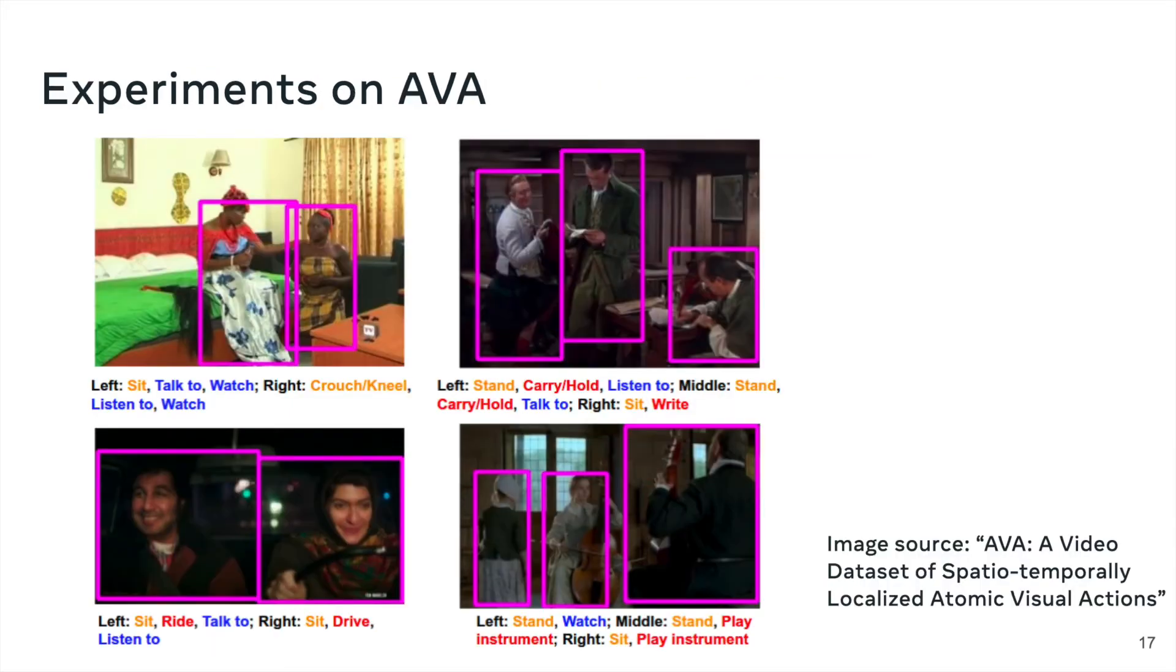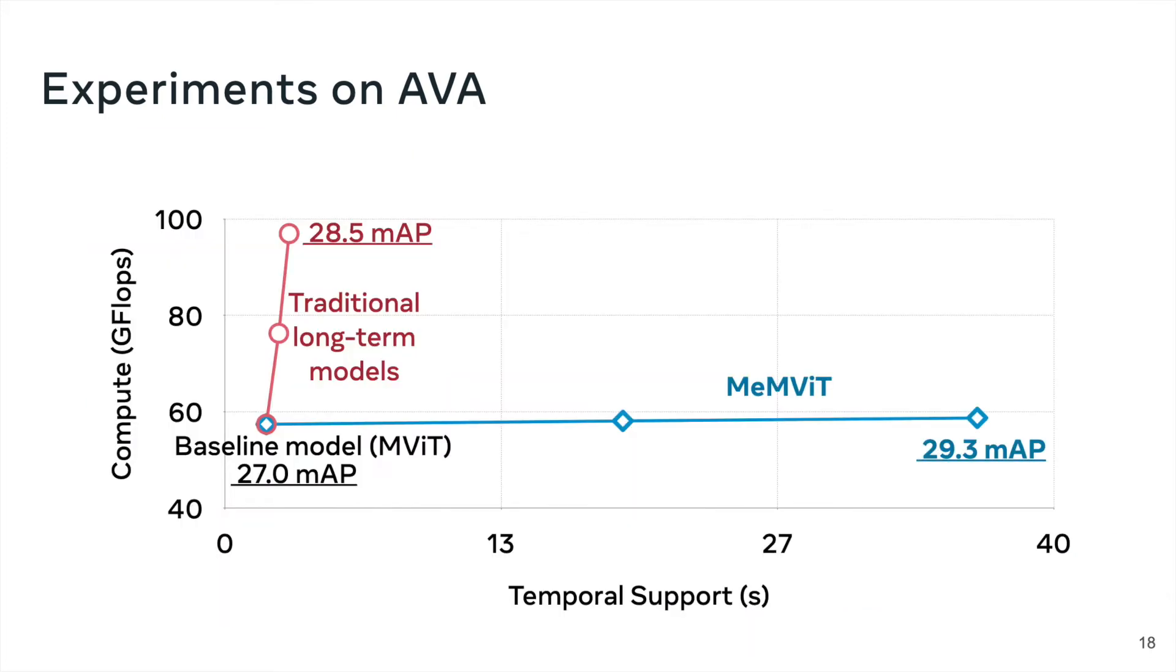We perform extensive evaluation on the AVA action recognition dataset. In experiments, we see that our method MEMVIT increases the temporal support of a baseline MVIT model significantly, with only a marginal increase in computational cost. More importantly, we observe a large improvement in accuracy, and even outperforms the expensive traditional long-term model.